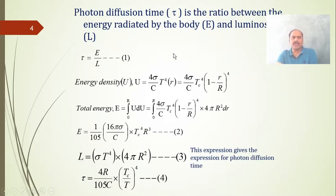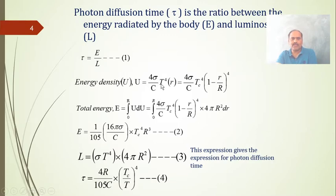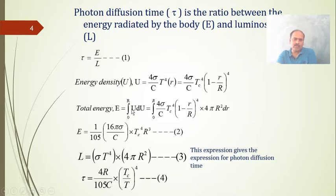This slide shows the derivation of photon diffusion time. It is the ratio of total energy radiated by the star to the luminosity. The total energy density can be evaluated using Stefan-Boltzmann's law: U = (4σ/c) × Tc⁴, where σ is Stefan's constant, c is the velocity of light, and Tc is the core temperature. The total energy density integrated from 0 to R gives (16σπ/c) × Tc⁴ × r³.